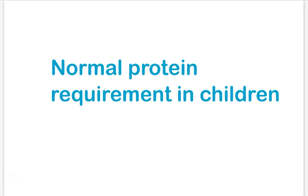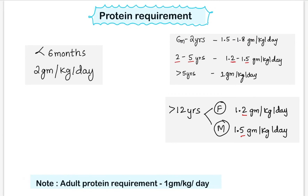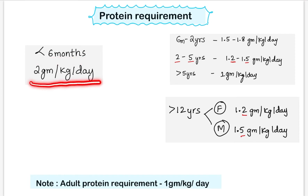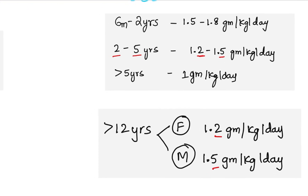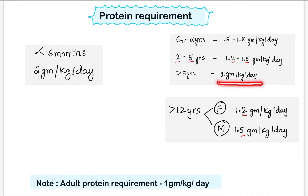Now we will learn normal protein requirements in children. The adult protein requirement is 1 gram per kg per day. In children less than 6 months, the requirement is 2 gram per kg per day — double the adult requirement. In children 6 months to 2 years, it is 1.5 to 1.8 gram per kg per day. In children 2 to 5 years, it is 1.2 to 1.5 gram per kg per day. A useful trick: 2, 1.5, 1.25. For children more than 5 years, it is 1 gram per kg per day like adults. During adolescence, the requirement increases — in females over 12 years it is 1.2, and in males it is 1.5 gram per kg per day.